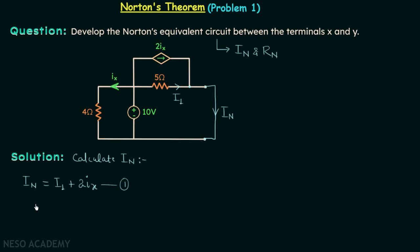Focusing on this section of the network, across the 4 ohm resistor the potential difference is 10 volts and the current through it is Ix. Therefore Ix equals 10 volts divided by 4 ohms, giving Ix equal to 2.5 amperes. Now we will calculate current I1, which equals 10 volts divided by 5 ohms.